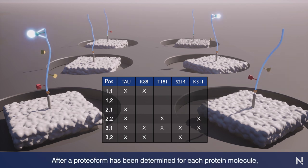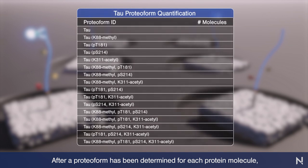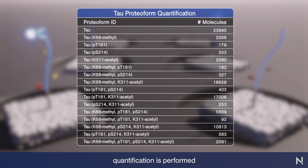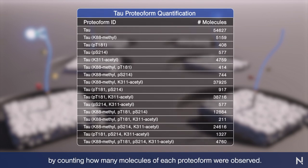After a proteoform has been determined for each protein molecule, quantification is performed by counting how many molecules of each proteoform were observed.